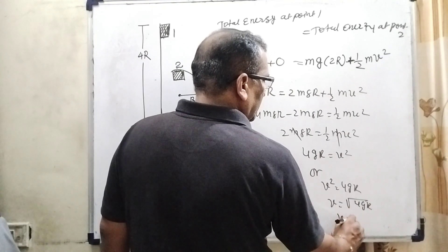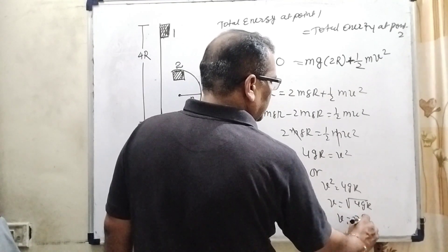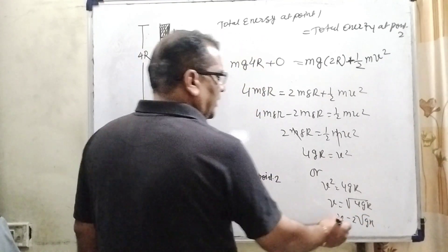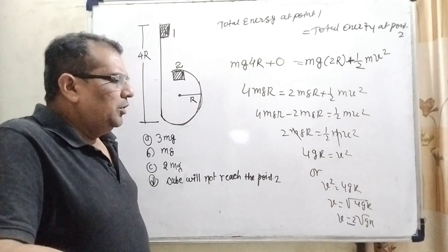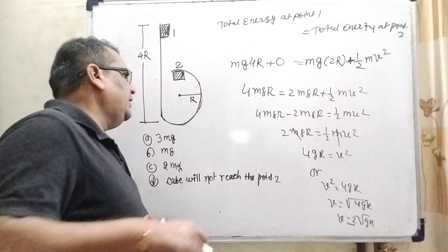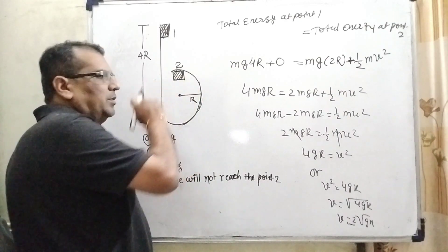So, v is equal to 4gR. It means 2 root gR. So, therefore definitely here we get v is equal to 2 root gR. It means definitely this block reaches the point 2.